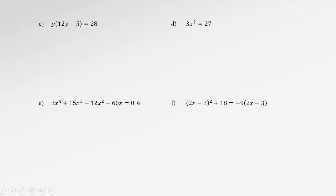Since the idea is to use the zero-factor property when solving polynomial equations, we must have zero on one side of the equation. So in example C, the 28 must be moved to the left-hand side. Therefore, we need to multiply out the bracket to get 12y squared minus 5y, then subtract 28, with everything equal to zero. Only then are we able to use the zero-product property.